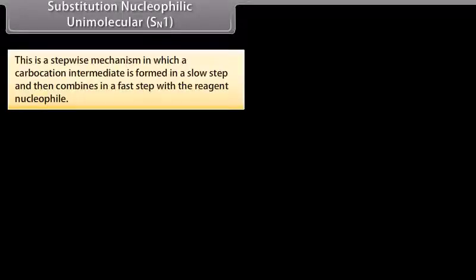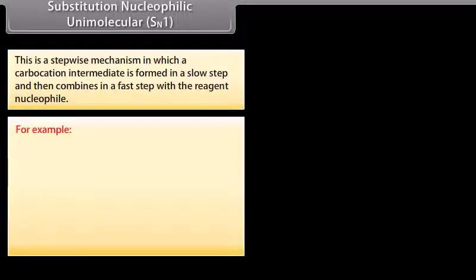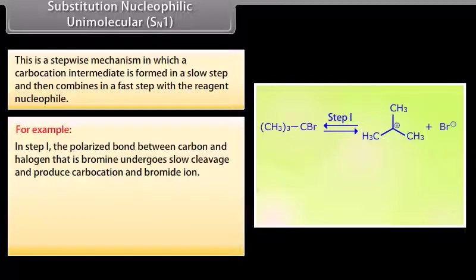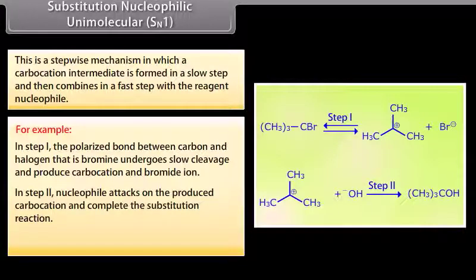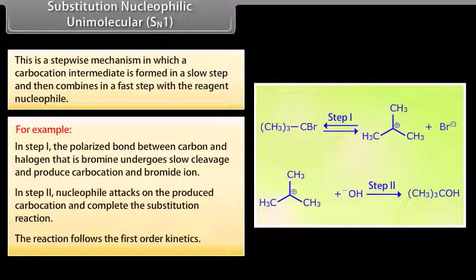Substitution nucleophilic unimolecular, SN1. This is a stepwise mechanism in which a carbocation intermediate is formed in a slow step and then combines in a fast step with the reagent nucleophile. In the first step, the polarized bond between carbon and halogen undergoes slow cleavage and produces carbocation and bromide ion. In the second step, nucleophile attacks on the produced carbocation and completes the substitution reaction. The reaction follows first-order kinetics. The order of reactivity of alkyl halides towards SN1 and SN2 reactions is as follows.